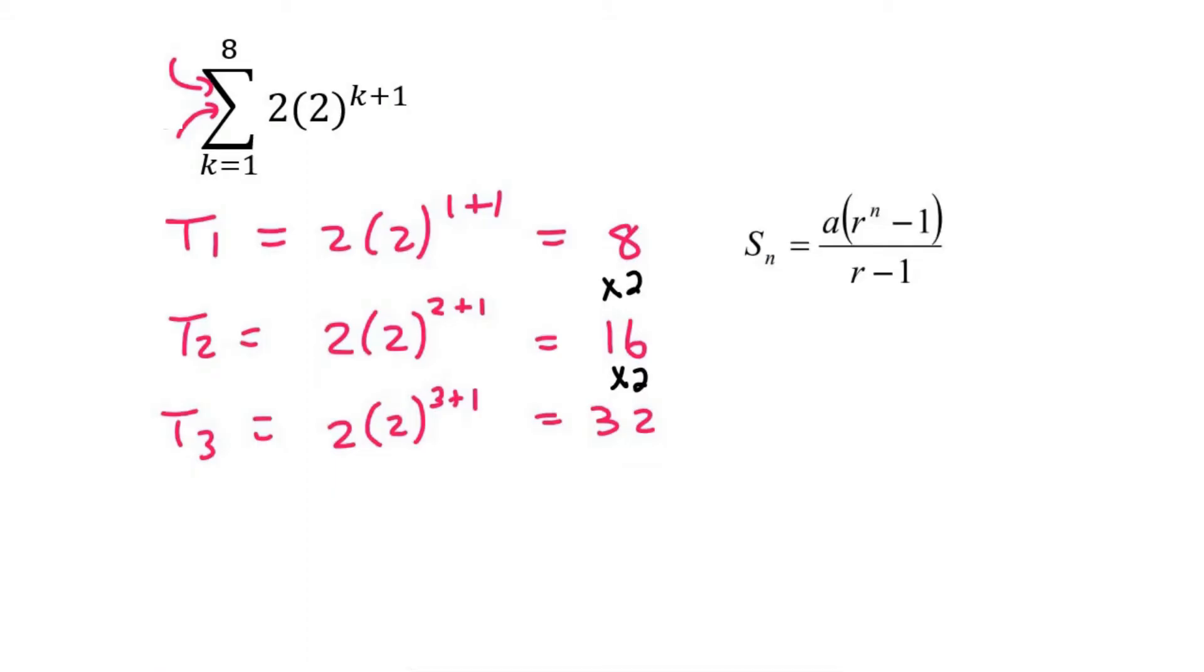And so we need to see how many terms we have. Now remember it's not always going to be the same as this number at the top but it is if this number is a 1. But remember the proper way to work out the number of terms is to go top number minus the bottom number and then always add 1. So that's going to be 8 minus 1 plus 1. So in this example there will be 8 terms.